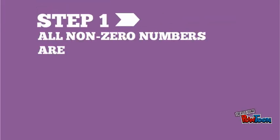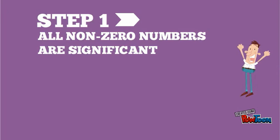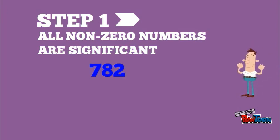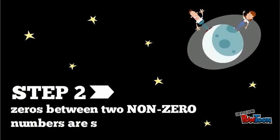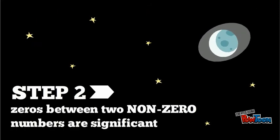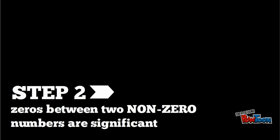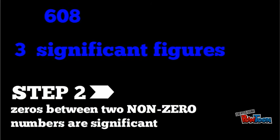The first rule is that all non-zero digits are always significant. So the number 782 has three significant figures. The next rule is that interior zeros — zeros that are between two non-zero numbers — are significant. So in 608, that zero in the middle is significant, giving us a total of three significant figures.